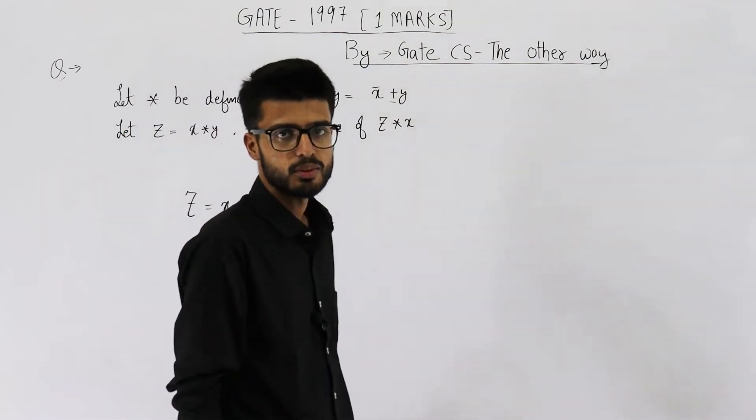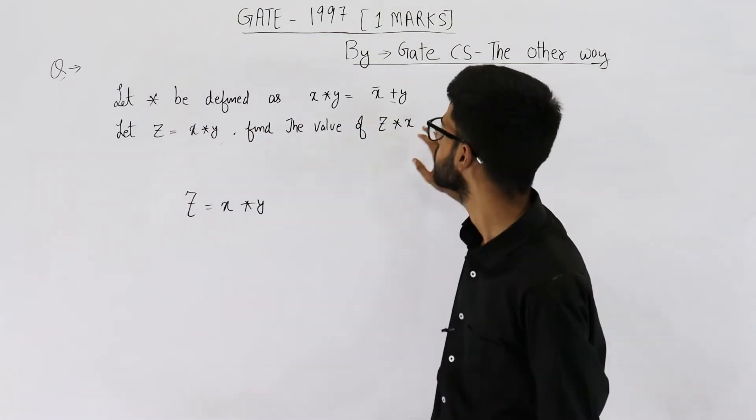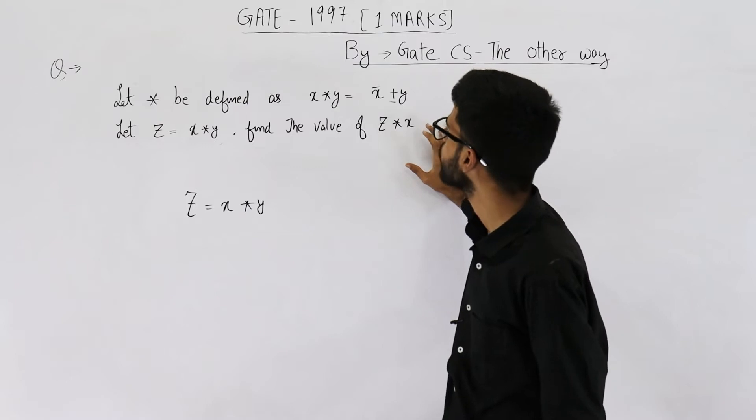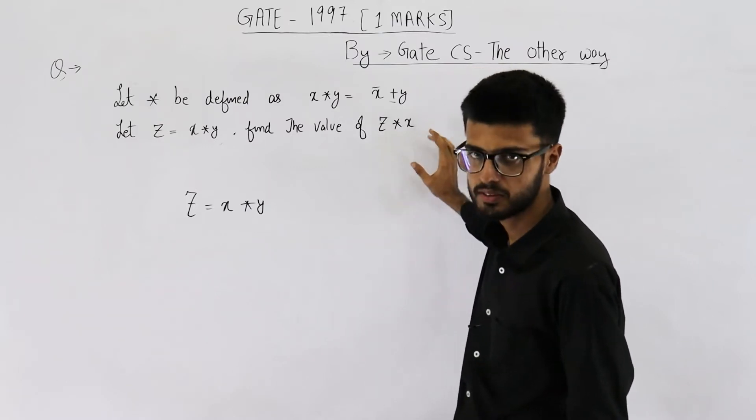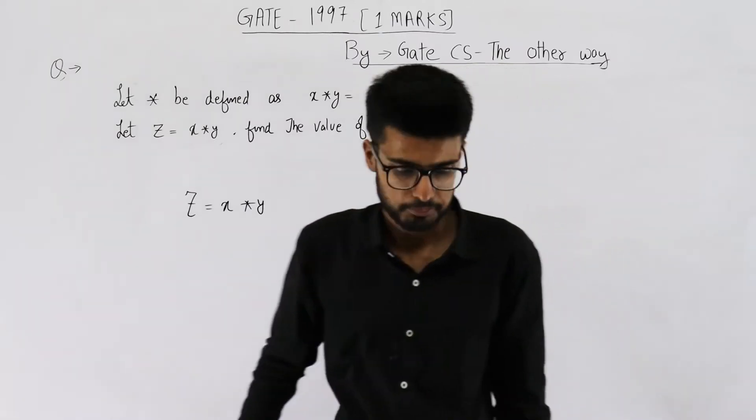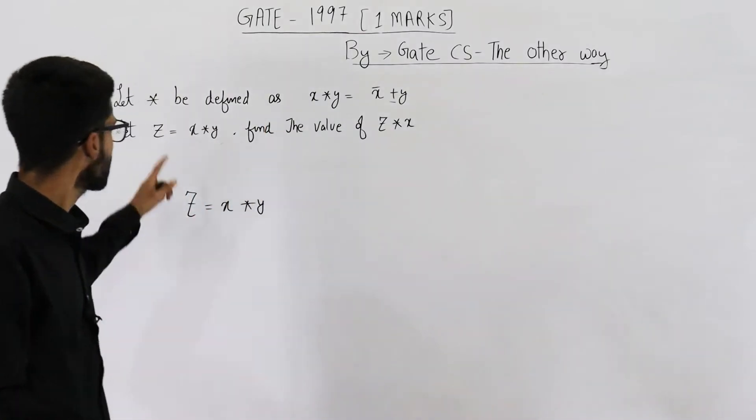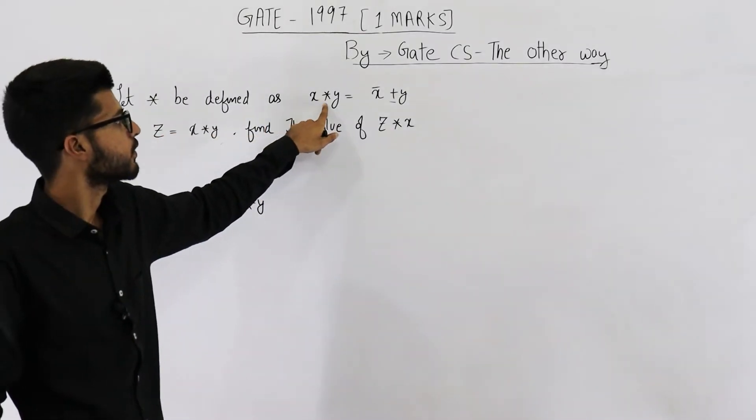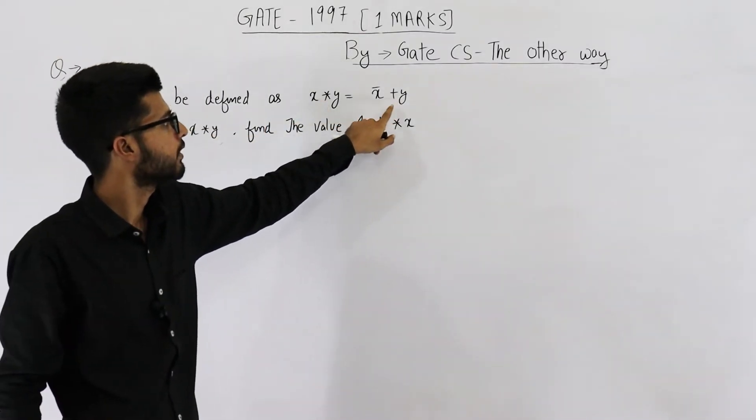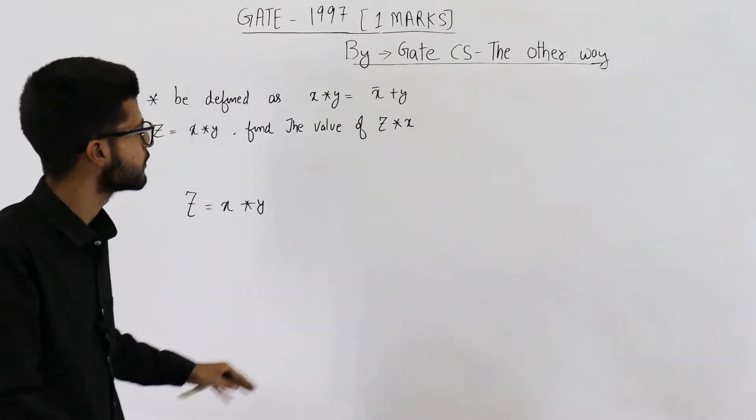Hello dear students, this is one of the simplest questions asked in GATE exam, from 1997, for one mark. Let's solve this one. They are saying star can be defined as x star y equals x complement plus y.